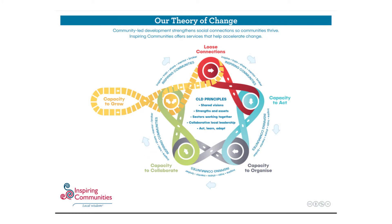This example comes from an organization in New Zealand called Inspiring Communities, who offer services that help accelerate change. They have a summary sentence that says: community-led development strengthens social connections so communities thrive. The precondition is strengthening conditions and the outcome is thriving communities. They have a diagram that shows a detailed outline of their theory of change, which is really worth looking at, and we've put a link to that in the show notes.